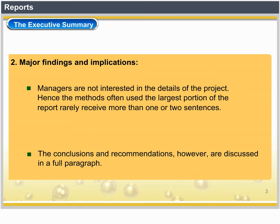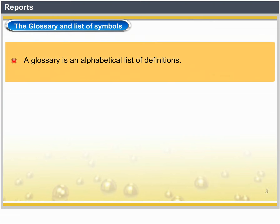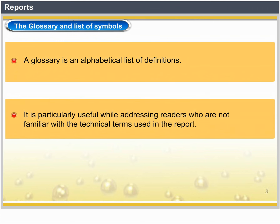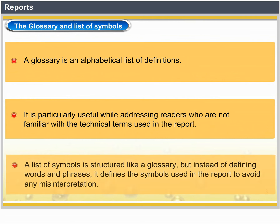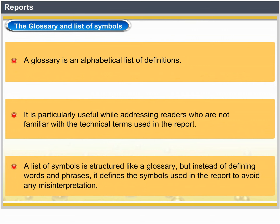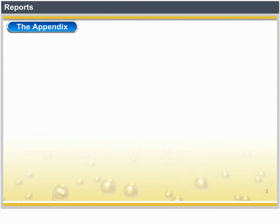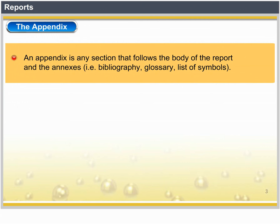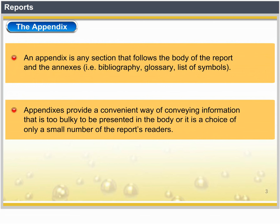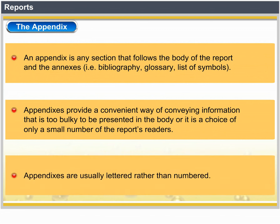The Glossary and List of Symbols. A glossary is an alphabetical list of definitions, particularly useful when addressing readers not familiar with the technical vocabulary used in the report. A list of symbols is structured like a glossary but, instead of defining words and phrases, it defines the symbols used in the report to avoid any misinterpretation. The Appendix is any section that follows the body of the report and the back matter — bibliography, glossary, list of symbols. Appendixes provide a convenient way of conveying information that is too bulky to be presented in the body or that will be of interest to only a small number of readers. Appendixes are usually lettered rather than numbered.